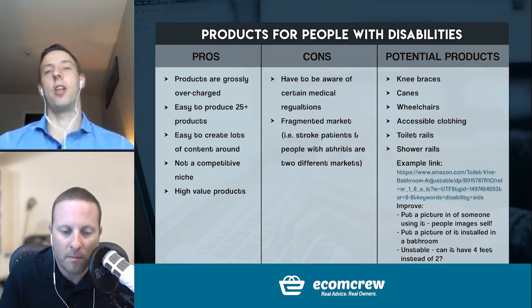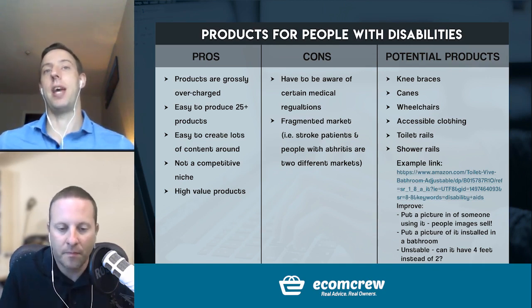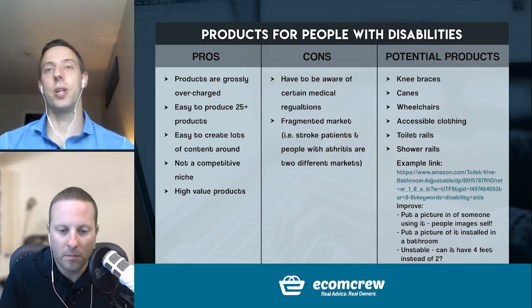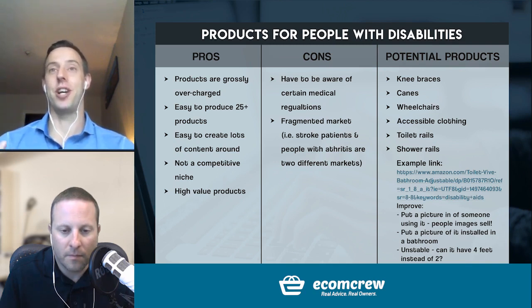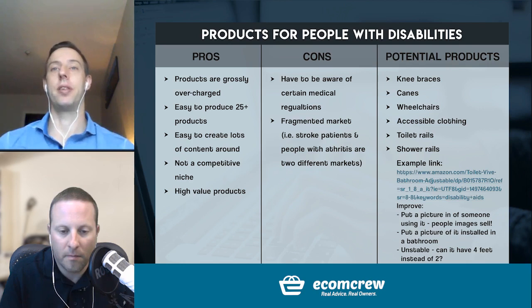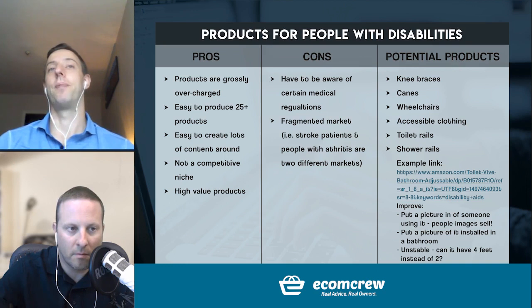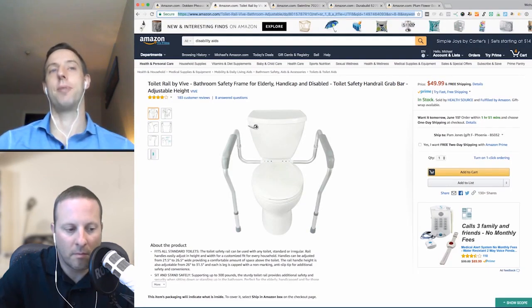Accessible clothing — people with disabilities often have problems putting on usual clothing, so things like pants without buttons or a belt that's easy to get on with paralysis. I hate the clothing niche overall, but you could probably pick some really good niche items within this niche that wouldn't be as bad as clothing normally is. And as mentioned before, toilet rails and shower rails — those rails that go along your bathtub or toilet to help somebody with mobility issues get up after they've been to the washroom or taken a shower. These are really simple items with not a lot of complexity and a lot of markup, as we're going to show with our next example.